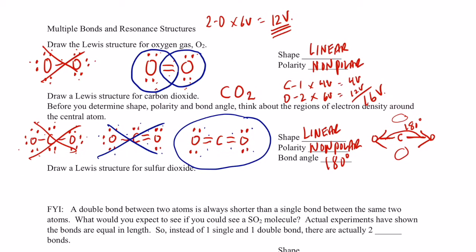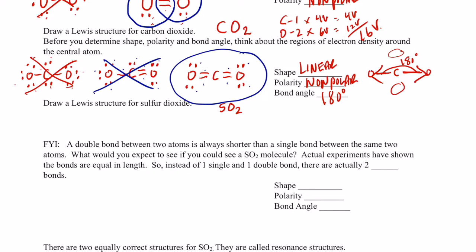Alright, let's try another one. Sulfur dioxide. Sulfur dioxide is SO2. Go ahead and pause the video and see what you come up with for a Lewis structure for sulfur dioxide.